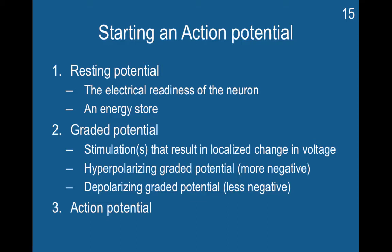Now you have an idea of the voltage gradients and the concentration gradients that play against each other to maintain the resting potential of a cell. The resting potential is the electrical readiness of the neuron. Resting and potential have really different meanings. Resting, of course, is something that's calm and not active, but potential — what's the potential of something? There's something that's coming, something that's expected. So this name really captures the state of the cell: it is at rest, but in its resting state, it has great potential.